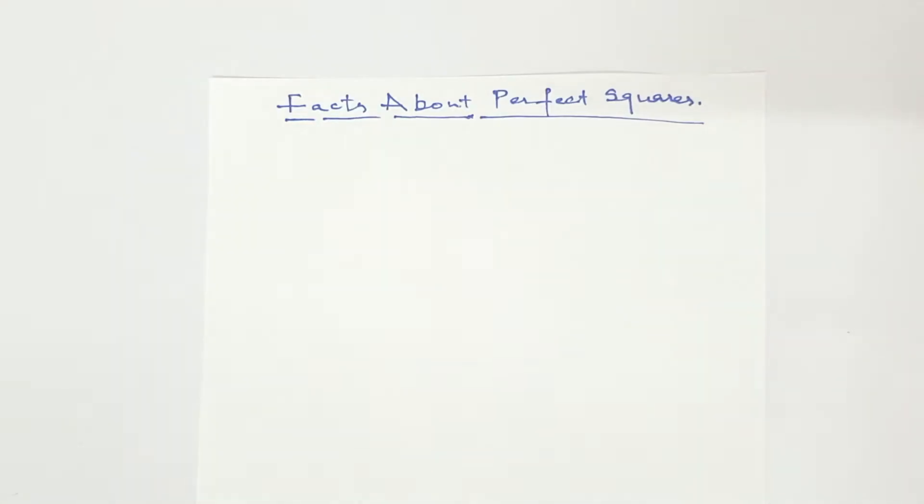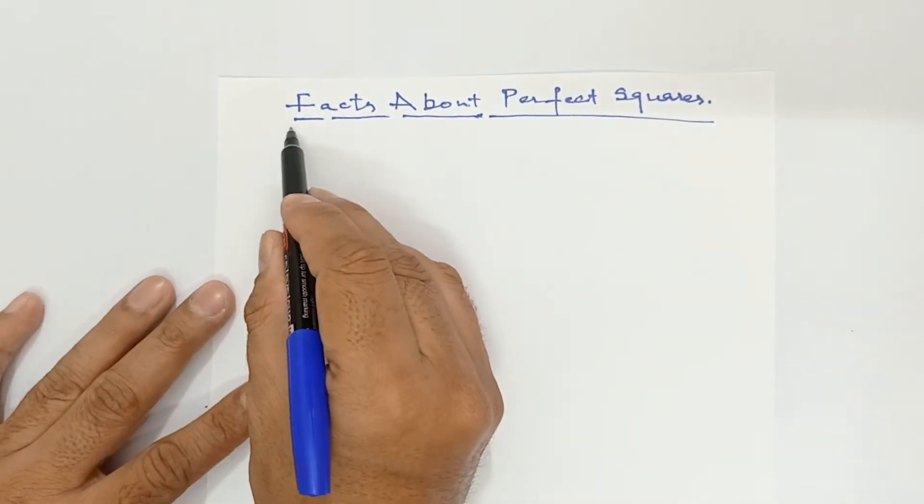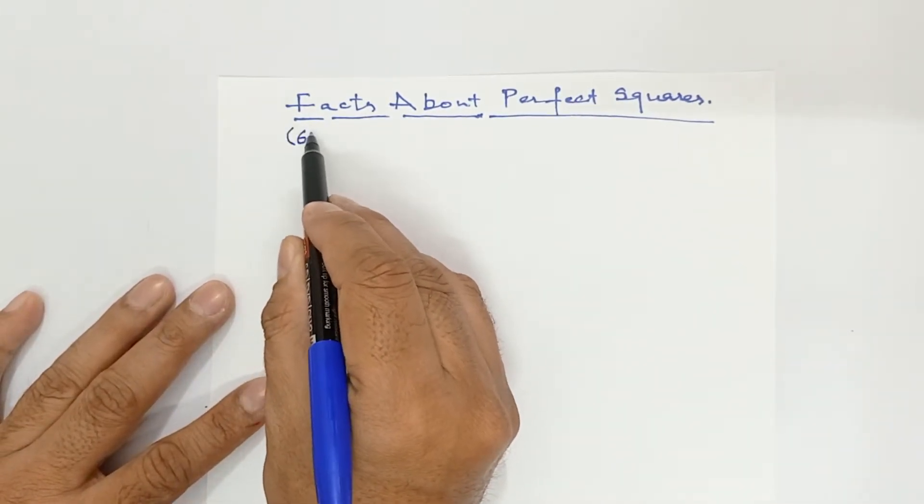Hello everyone, in my previous video in part 1, I had done what is a square of a number and what are the facts of perfect squares, and I had done there 5 facts about perfect squares. Now in this part 2 video, I am doing some more facts.